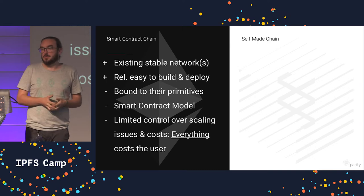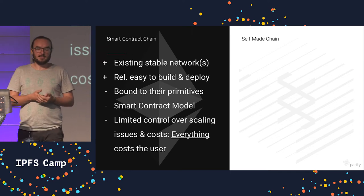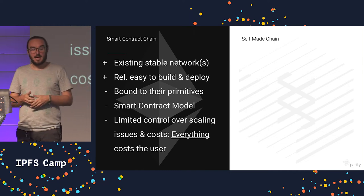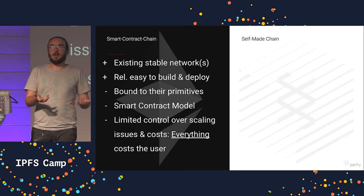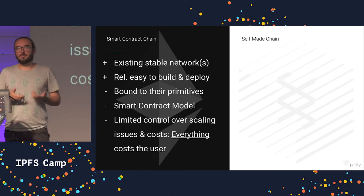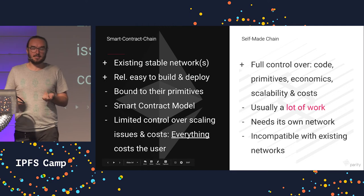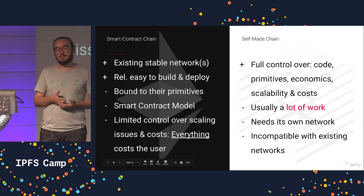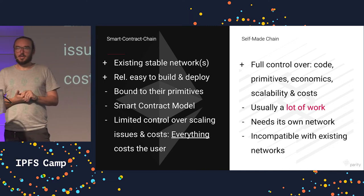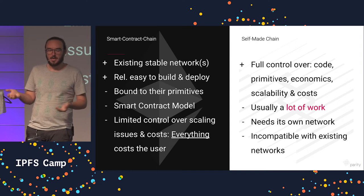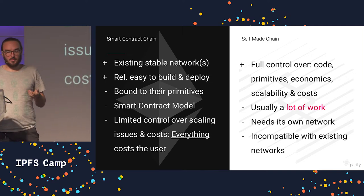It has an existing stable network, which makes it really easy to deploy things there. However, you need to accept whatever primitives these chains have, as well as the smart contract model it works with. That's not always a problem, but sometimes. Most of the time, the biggest problem is actually scaling — an issue of cost — meaning you don't necessarily want everyone to pay for every tweet or every contribution they make. But the smart contract model kind of enforces that on you. This is why a lot of people switch to self-made chains, which gives them full control over the code, the primitives, the economics, and the scalability. However, it's a lot of work — even something like Mimblewimble, which forks a Bitcoin codebase, still takes a year to build with a team of people. Moreover, this still needs a new network, so you need to ramp up all the nodes to run this code, and most of the time it's incompatible with existing networks.